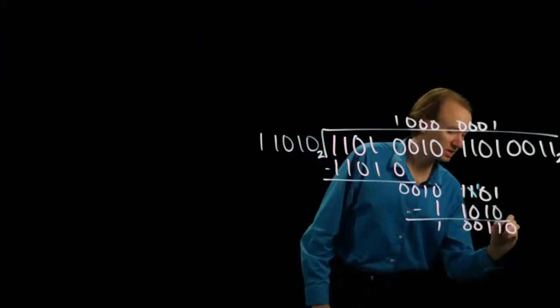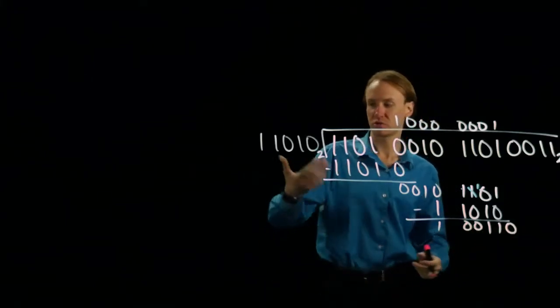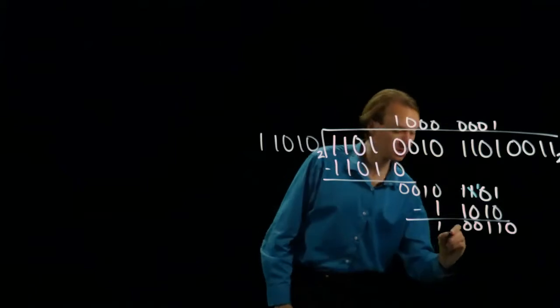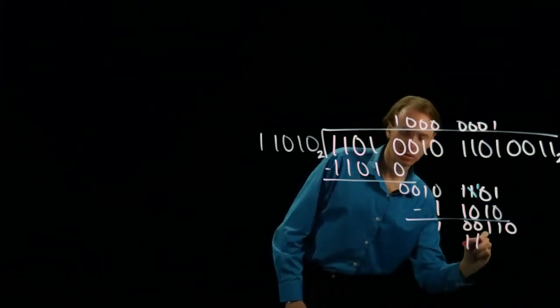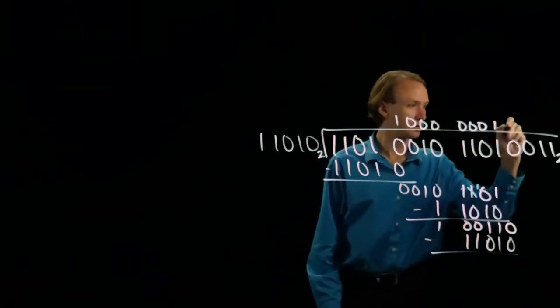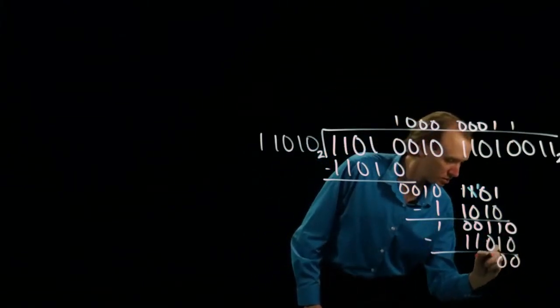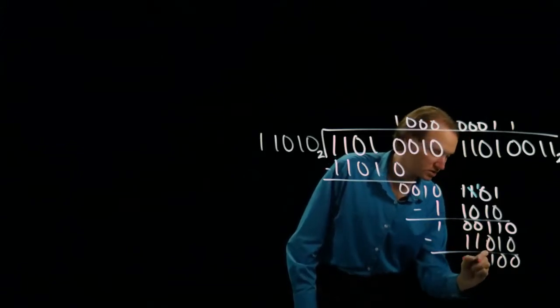I'll pull down my next bit, and again I've got a six-bit binary number, so I know I can do my subtraction. And one hundred minus eleven is one.